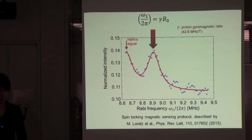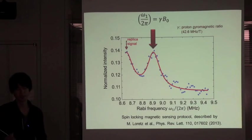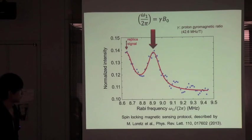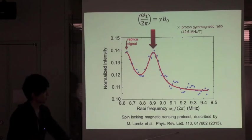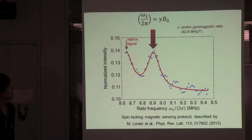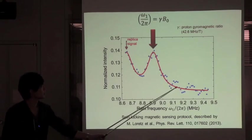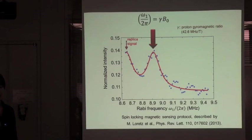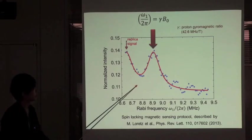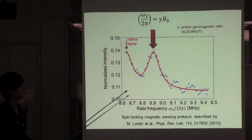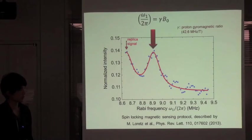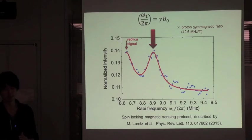This is our results. We also succeeded in the detection of ensemble proton spin. We used spin locking magnetic sensing protocol described by this paper. The peak at 8.9 MHz corresponding to proton Raman frequency was clearly seen. This means we succeeded in the detection of ensemble proton spins.